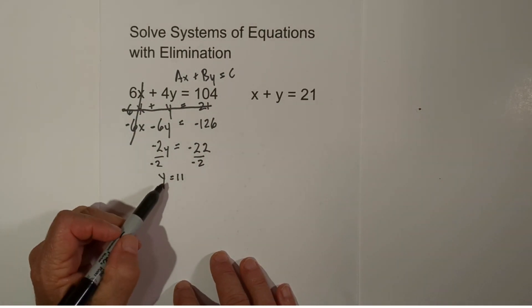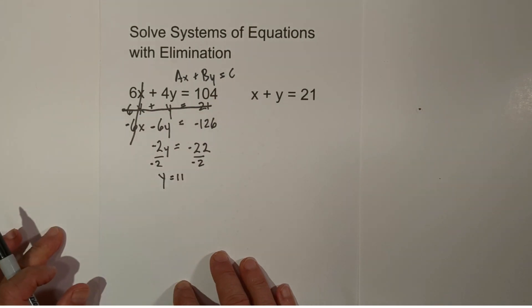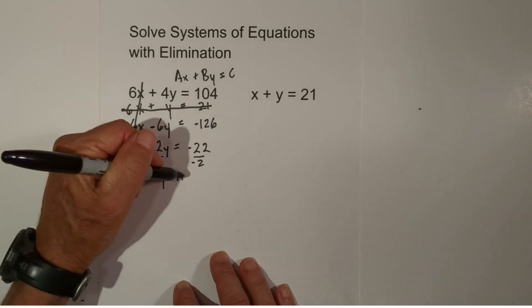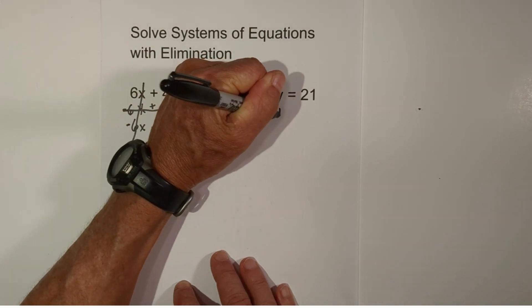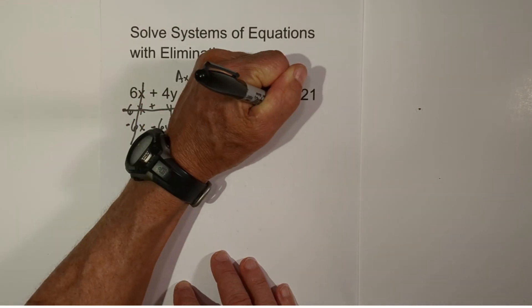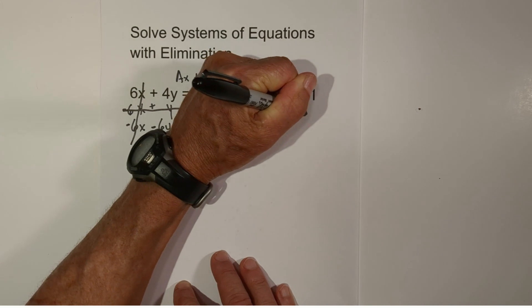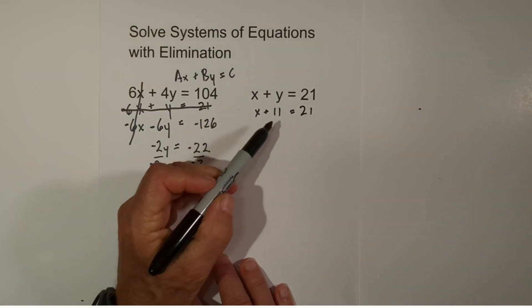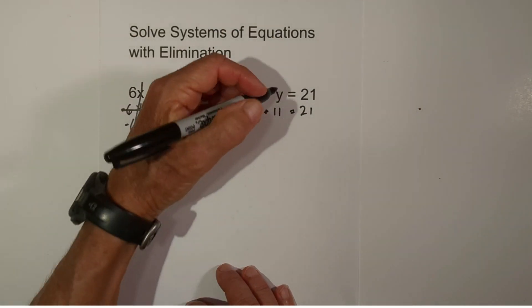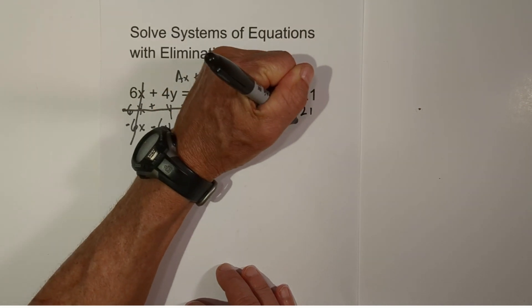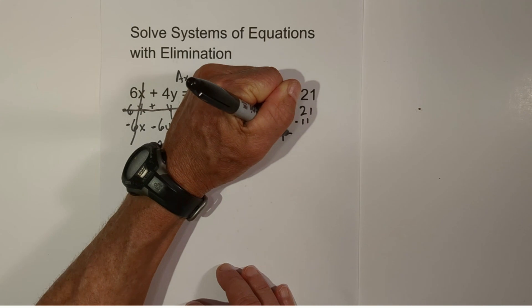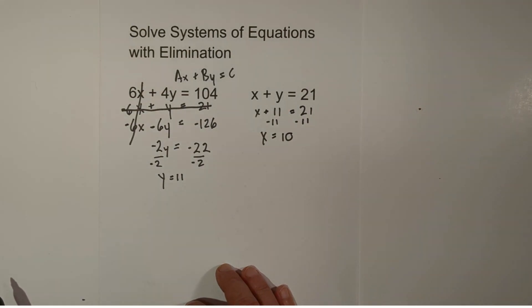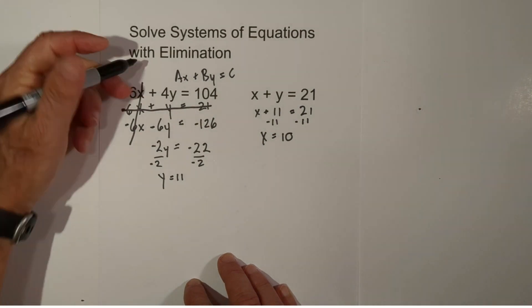Now we need to figure out what x is by plugging y = 11 back into the original equation. So y is 11: 11 + x = 21. Subtracting 11 from both sides gives us x = 10.